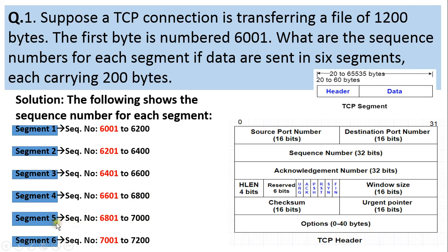Segment 5 will carry 200 bytes from 6801 to 7000. When this segment is transmitted, the sequence number field will specify 6801, which is the first byte number for this segment. Finally, segment 6 will carry sequence numbers 7001 to 7200 — again 200 bytes — and the sequence number in the TCP header will be 7001, which is always the initial sequence number. This completes the example.